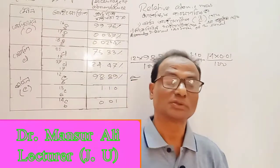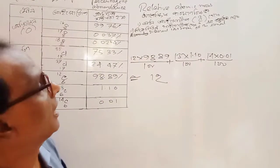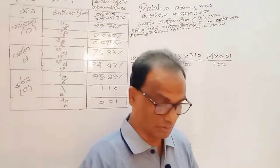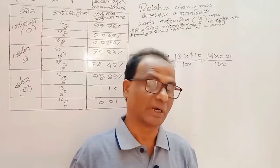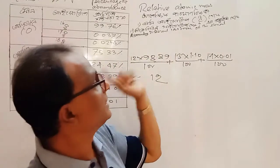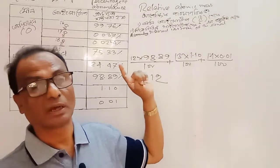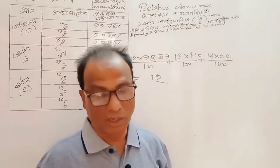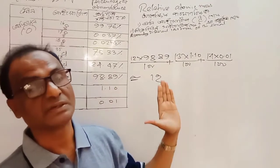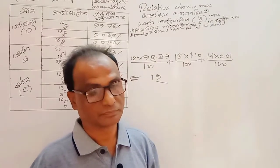Assalamu alaikum warahmatullahi wabarakatuh. Dear students, today I am going to calculate relative atomic mass of an atom. Relative atomic mass will be calculated from the carbon isotope and from the percent abundancy of different isotopes.